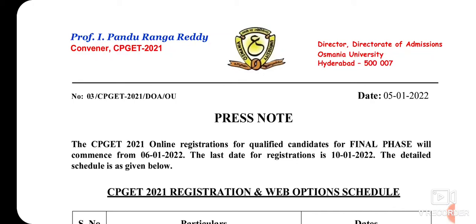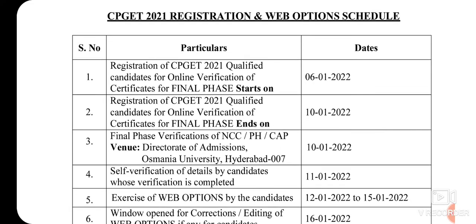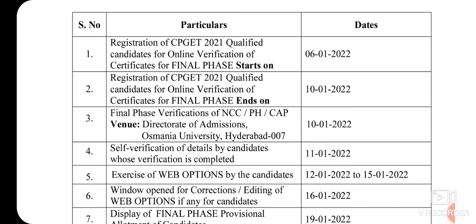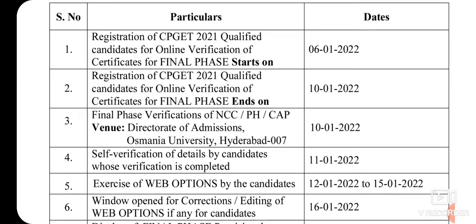Hi viewers, welcome to my channel Study with UV. TS CPK 2021 ki sambandhi final phase third phase or final phase schedule release aindi. January 6th nundi certificate verification start avutundi. Registration of CPK 2021 qualified candidates for online verification of certificates for final phase starts on 6th January 2022.